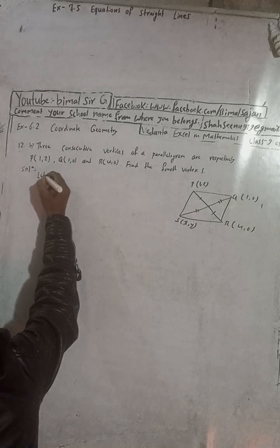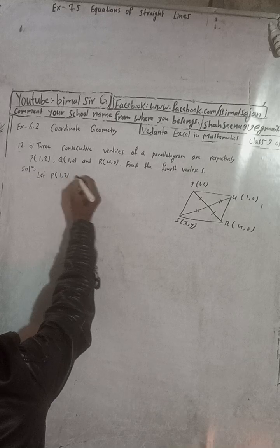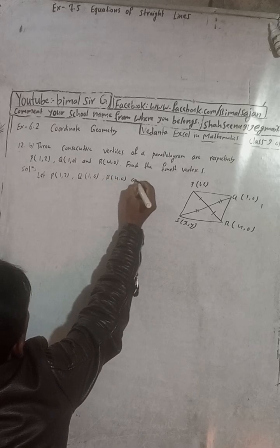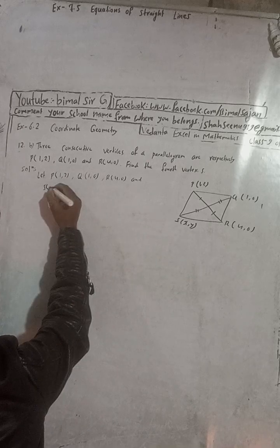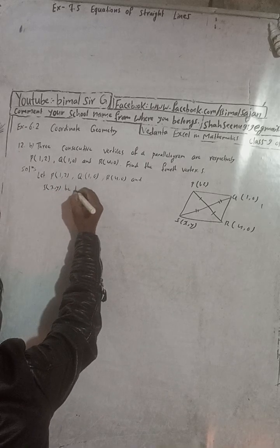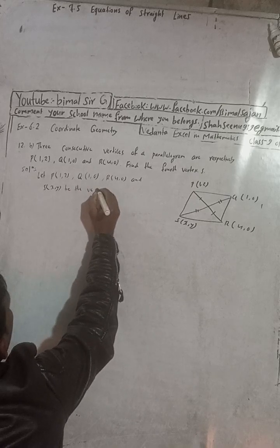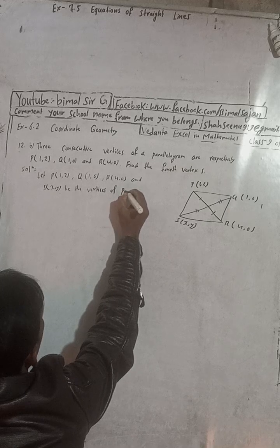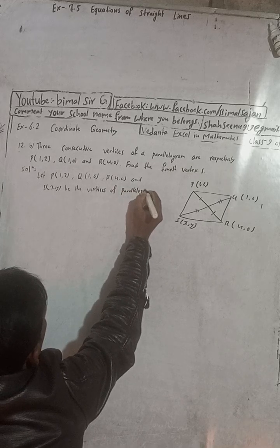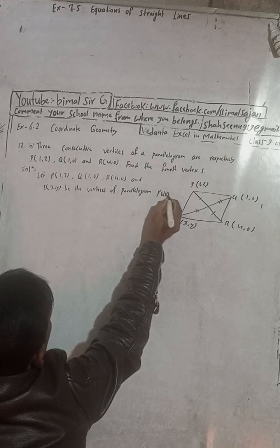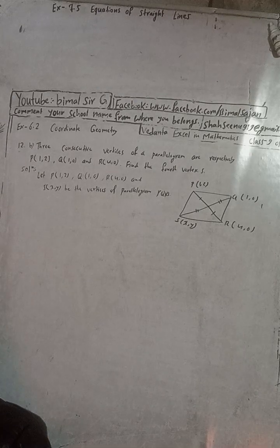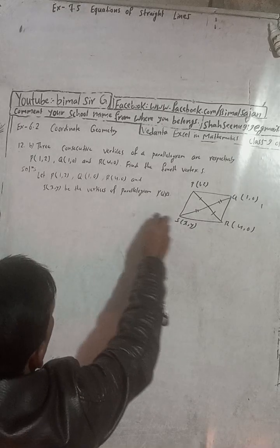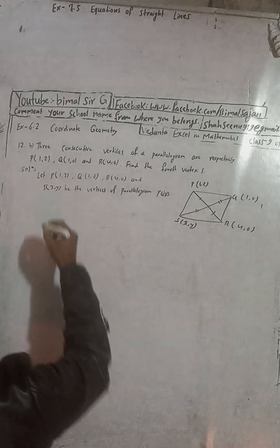Let P be (1, 2), Q be (1, 0), R be (4, 0), and S be (x, y). These are the vertices of the parallelogram PQRS.